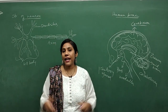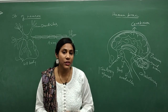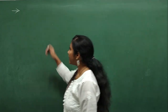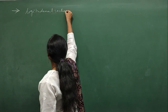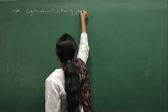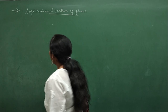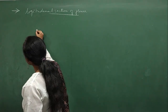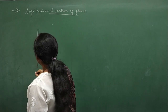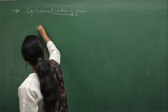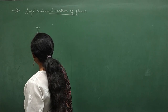Those are the two structures from Control and Coordination. Now we move to the chapter How Do Organisms Reproduce. The first diagram is the longitudinal section of a flower — one of the easiest diagrams. Start by drawing the style: one elongated tube with a round stigma on top. Then draw the stem-like structure and sepals below.